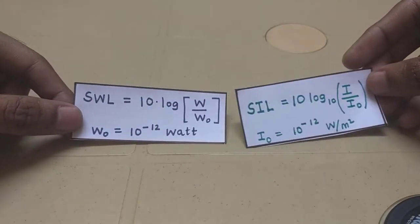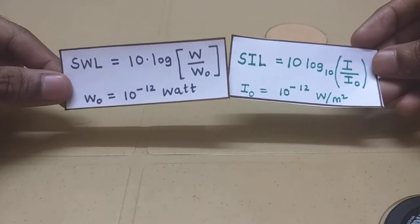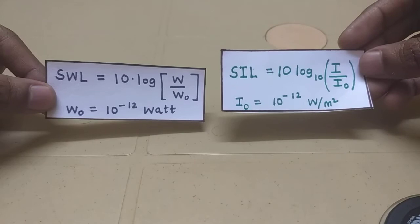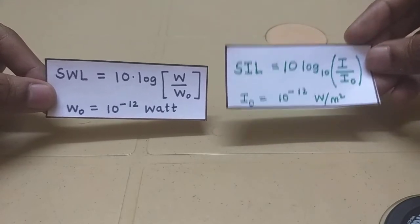So now sound power is a scalar, it doesn't have any direction, whereas sound intensity is a vector. It has directions, and the direction represents the flow of acoustical energy.